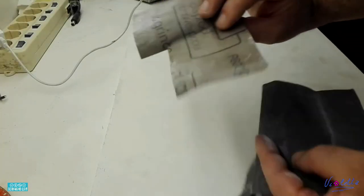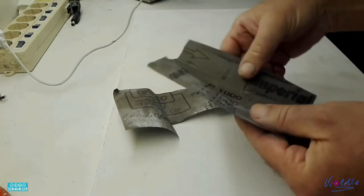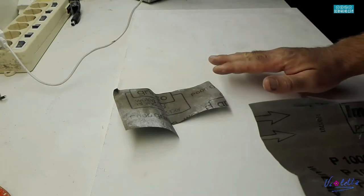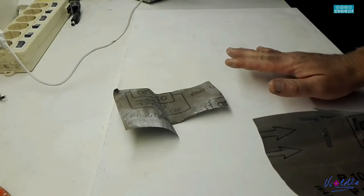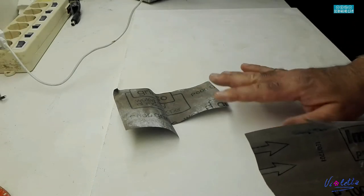Now we will sand with a 600 and then subsequently with a 1000 so that we will have an almost mirror surface.